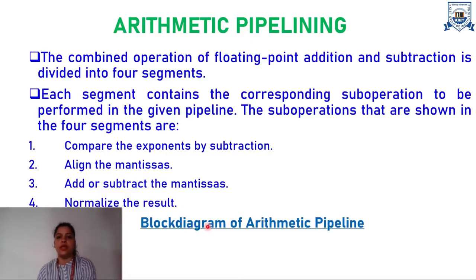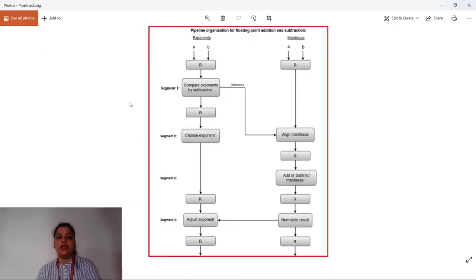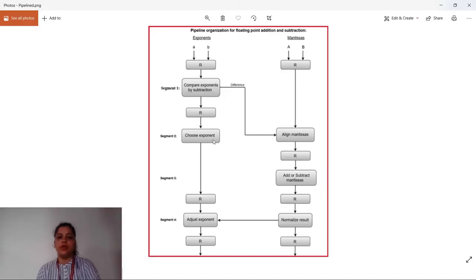Let's try to understand this with the help of the block diagram. This is the block diagram of arithmetic pipelining in which we have four segments: segment 1, segment 2, segment 3, and segment 4. Segment 1 deals with the comparison of the exponents by subtraction. In segment 2, we choose the exponent and sometimes align the mantissas. In segment 3, we perform addition or subtraction of the mantissas, whereas in segment 4, exponents are adjusted and the results are normalized.